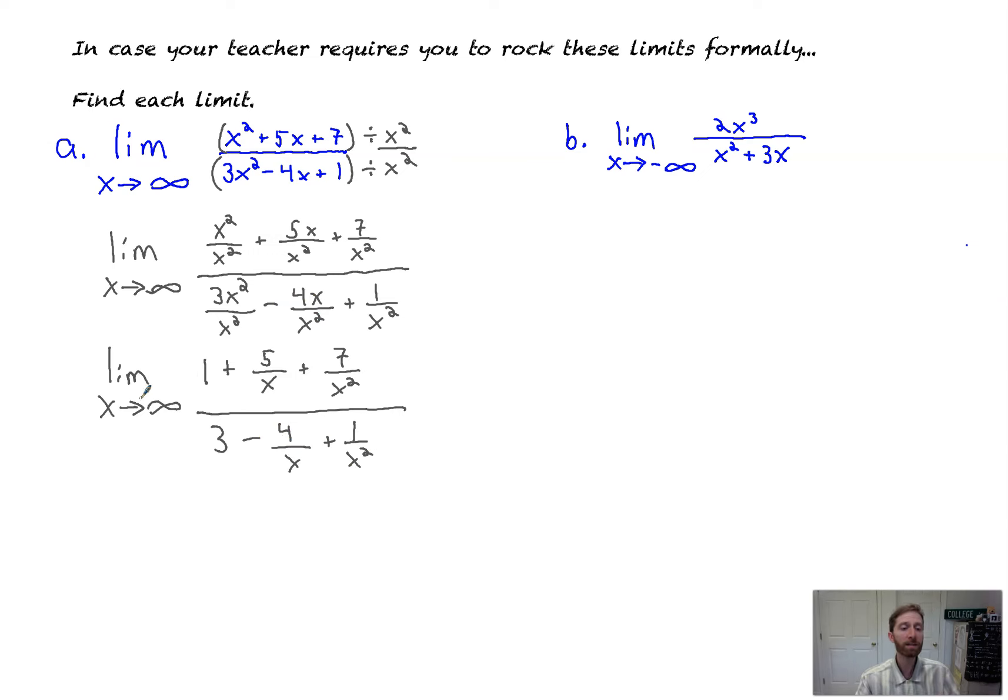Now, if you think about it, the limit as x goes to infinity of each of these, you're essentially plugging in infinity into each of these parts. Well, we'll be left with 1. 5 over infinity is 0. 7 over infinity squared is also 0. So you're left with 1 plus 0 plus 0 over, similarly, 3. Plug in infinity into this. 4 over infinity is 0. 1 over approaching infinity squared is also 0. And you're left with, therefore, 1 third.